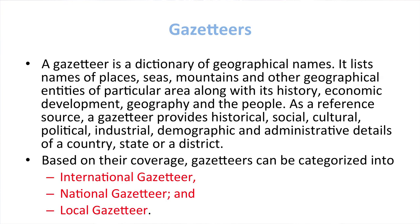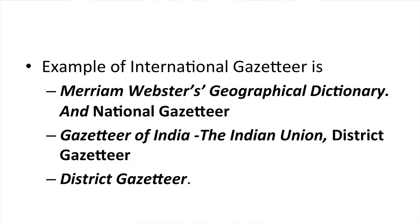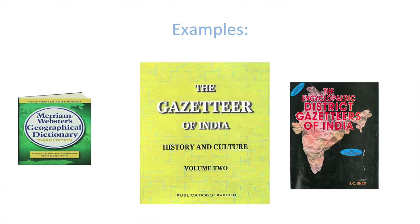A gazetteer is a dictionary of geographical names. It lists names of places, seas, mountains, and other geographical entities of a particular area, along with their history, economic development, geography, and people. As a reference source, a gazetteer provides historical, social, cultural, political, industrial, demographic, and administrative details of a country, state, or district. Based on coverage, gazetteers can be categorized as international, national, and local. An example of an international gazetteer is Merriam-Webster Geographical Dictionary. Gazetteer of India is a national gazetteer, and Haryana District Gazetteer is a district gazetteer.